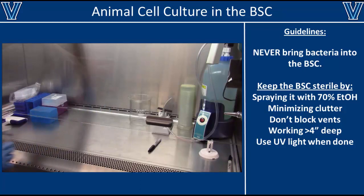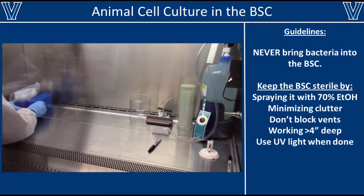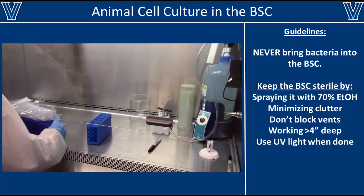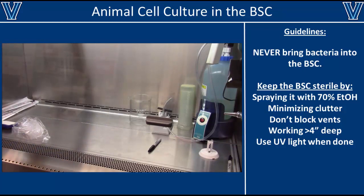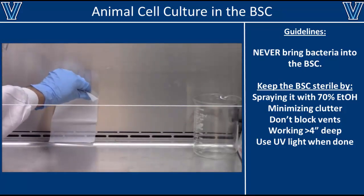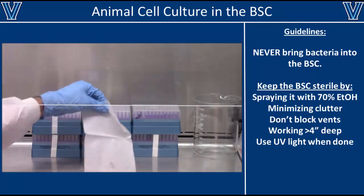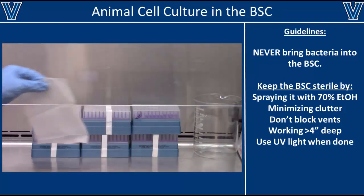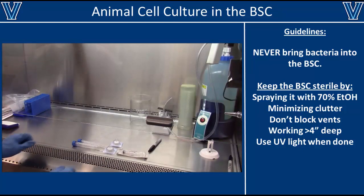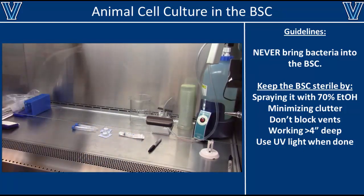It is also essential to keep the BSC as free of clutter as possible while working inside of it. Excess materials can provide hiding places for contaminants that protect them from ethanol or UV light. Most importantly, excess clutter can block the vents and keep the BSC from working properly — if vents are blocked, the air won't be filtered and contaminants could accumulate. You should also work at least four inches away from the front vent to protect your sample from airflow exposure.